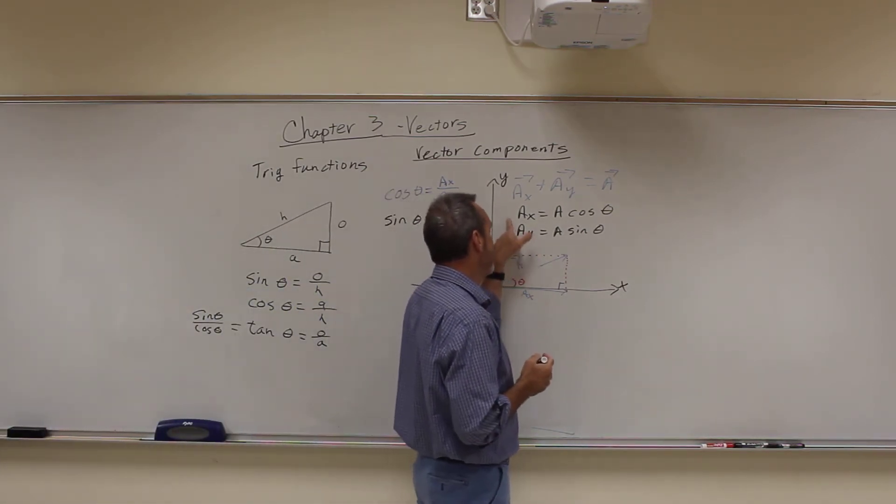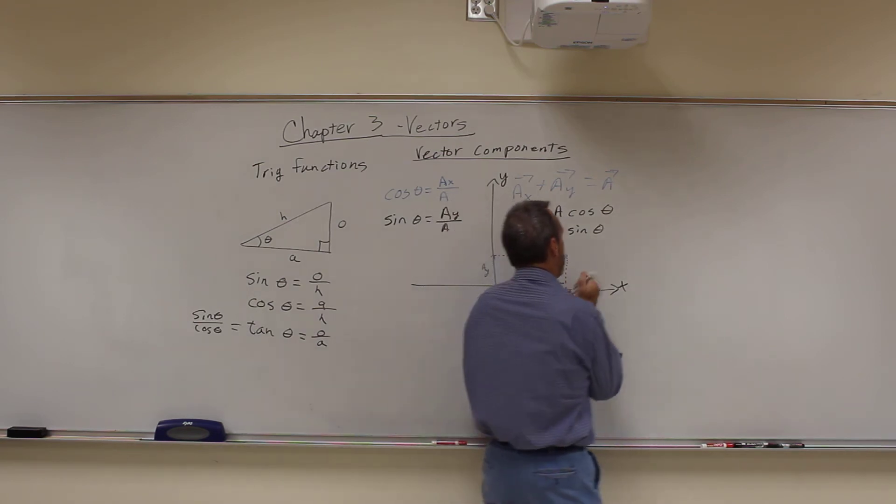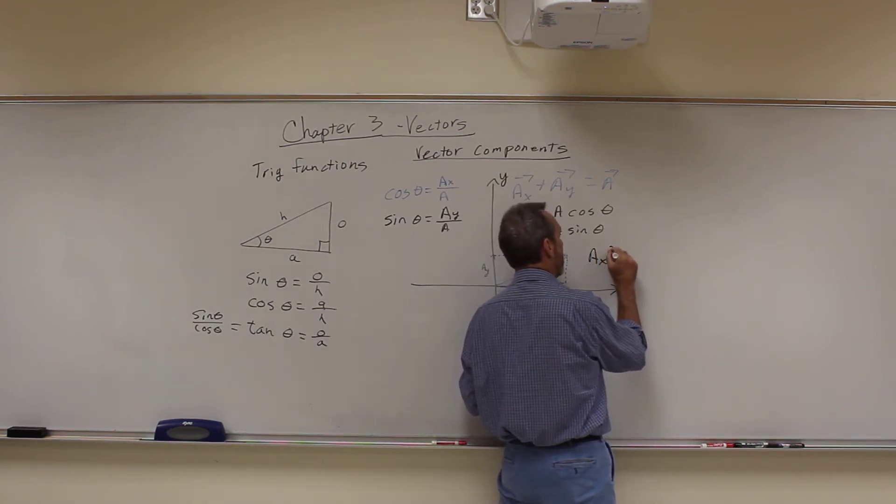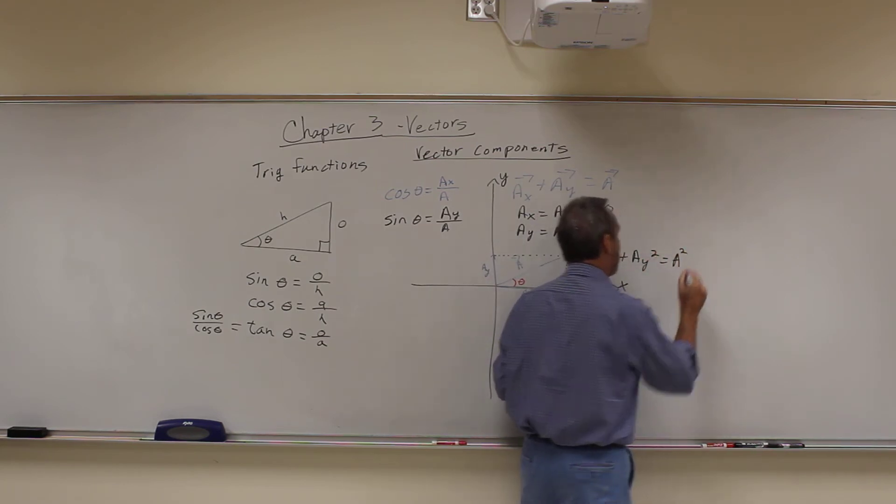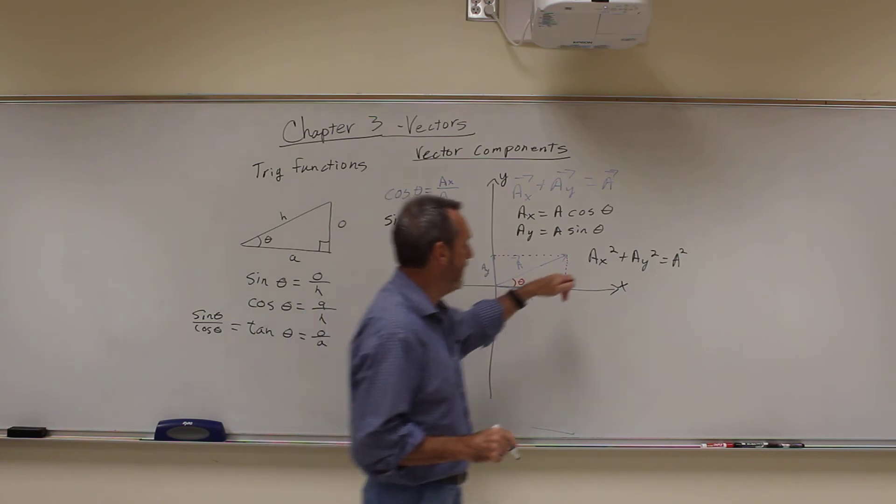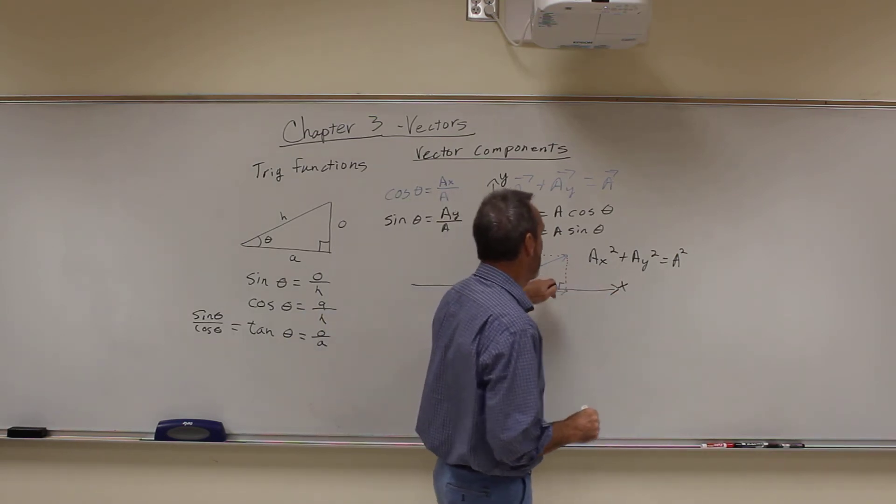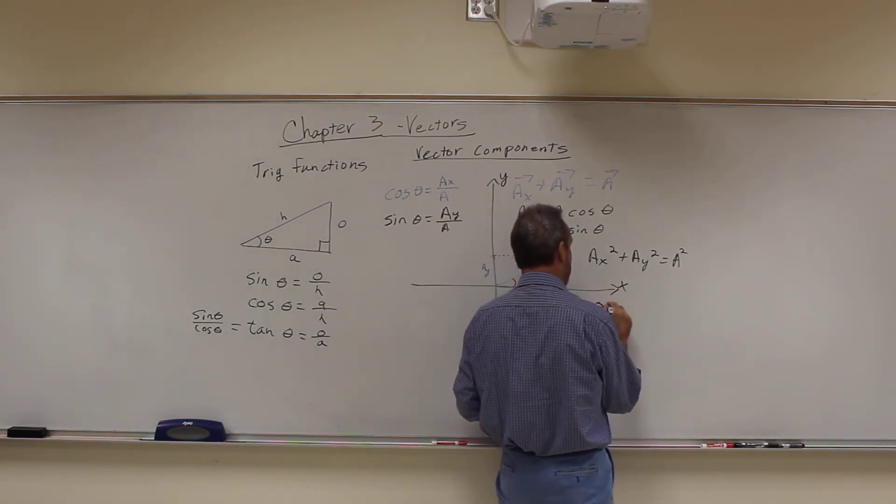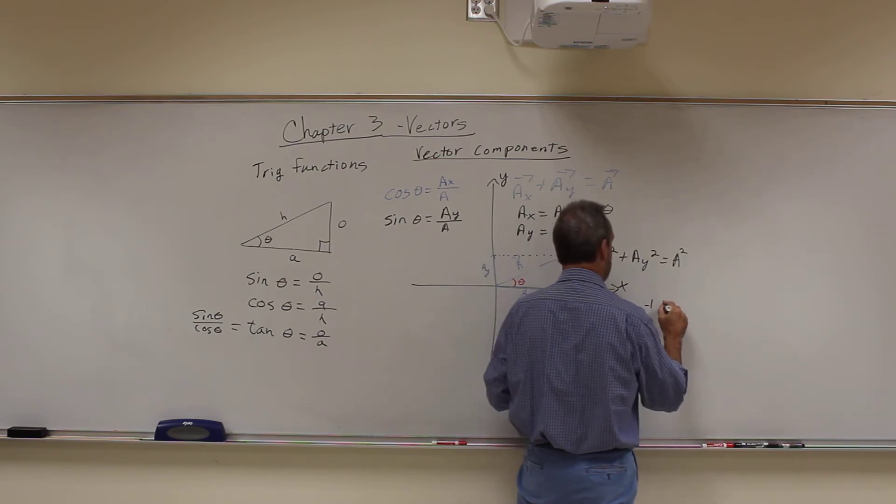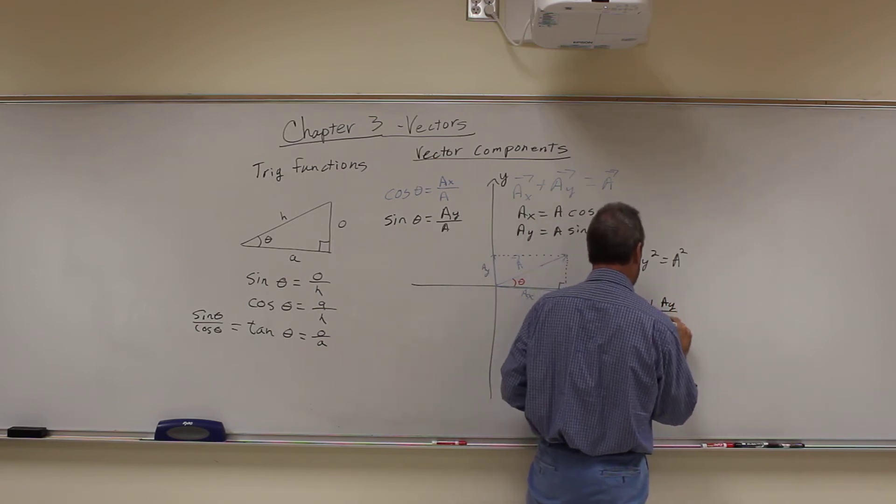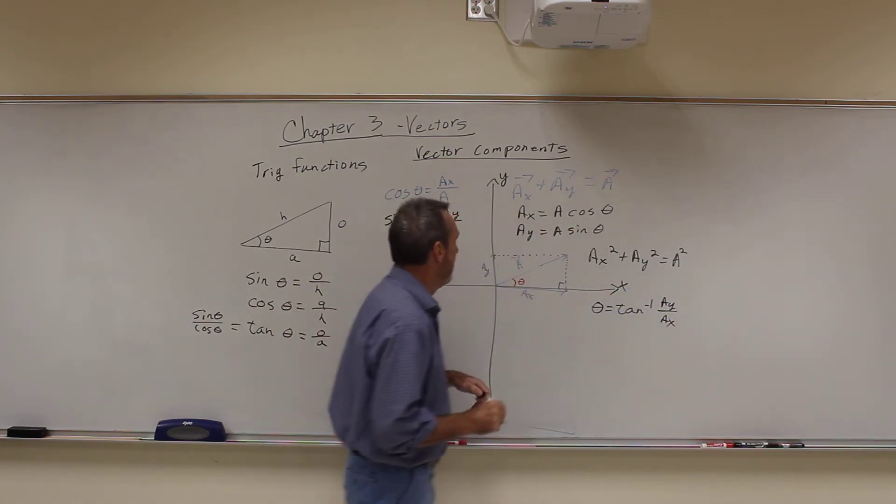And if we know AX and AY and we're trying to get A, we have to use the Pythagorean theorem. We have to say AX squared plus AY squared is equal to A squared. That gives us the magnitude. And if I know AX and AY, but I want to figure out the angle, I'm going to use that theta is equal to the inverse tangent of the opposite, which is AY over AX.